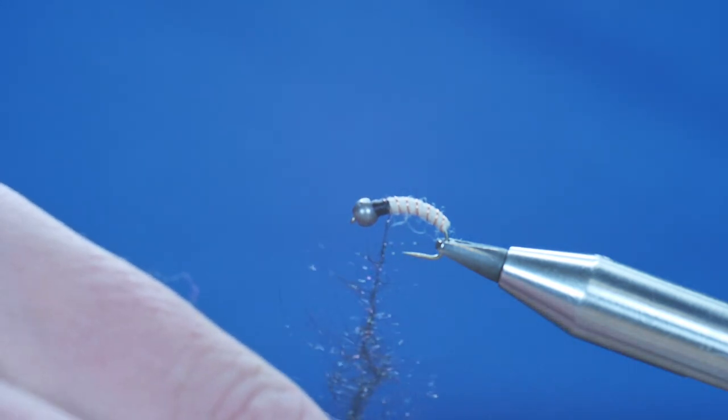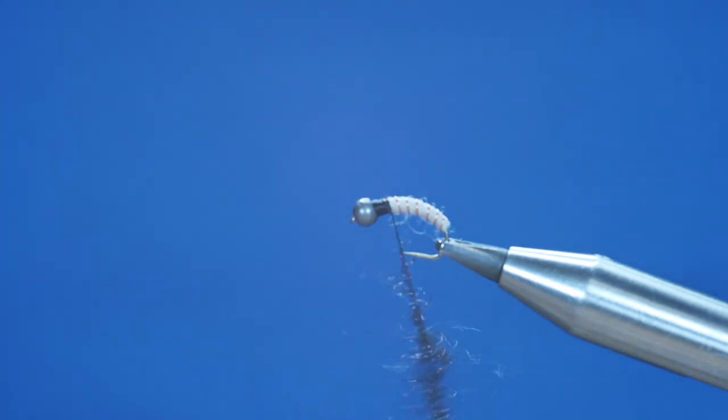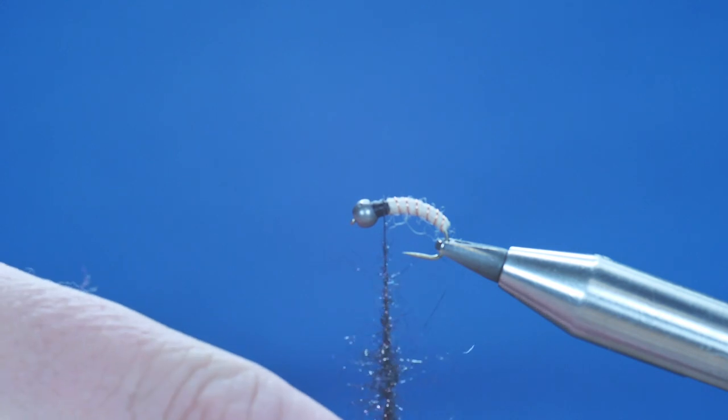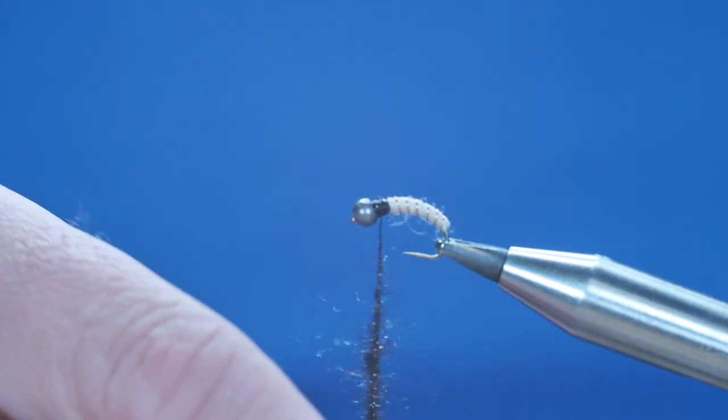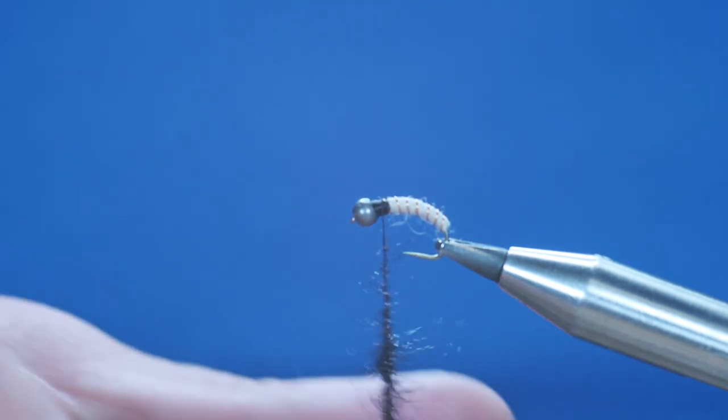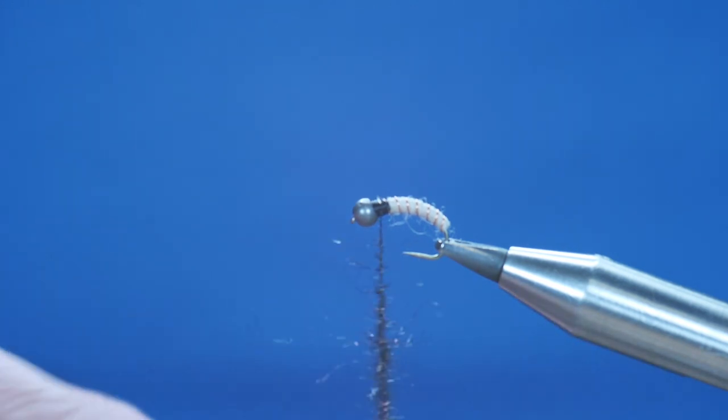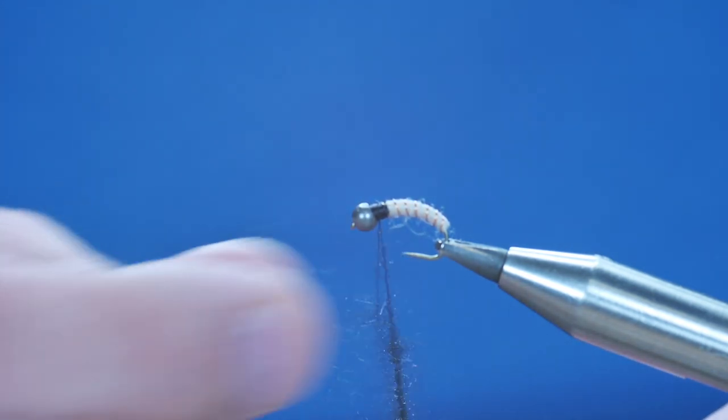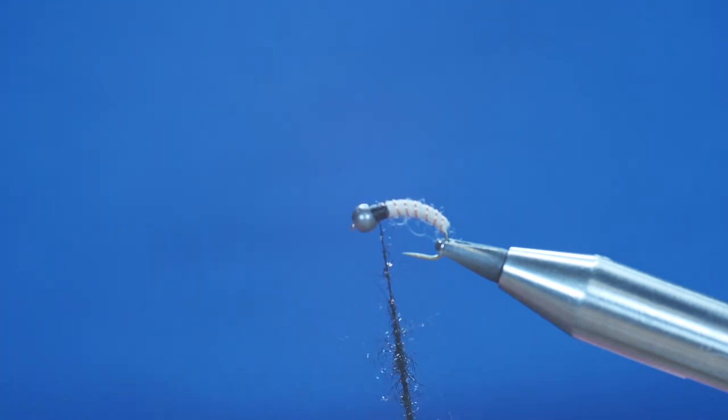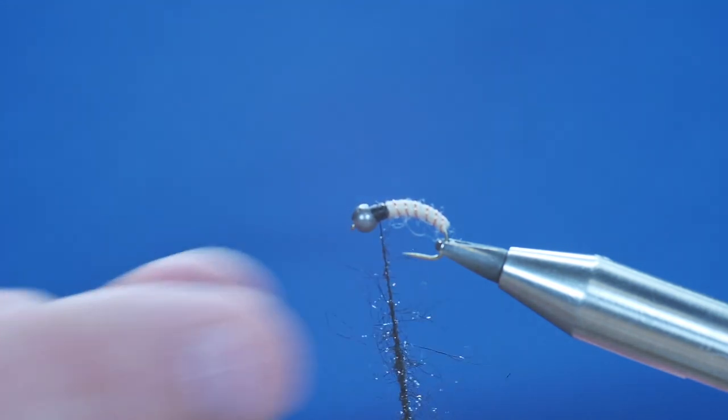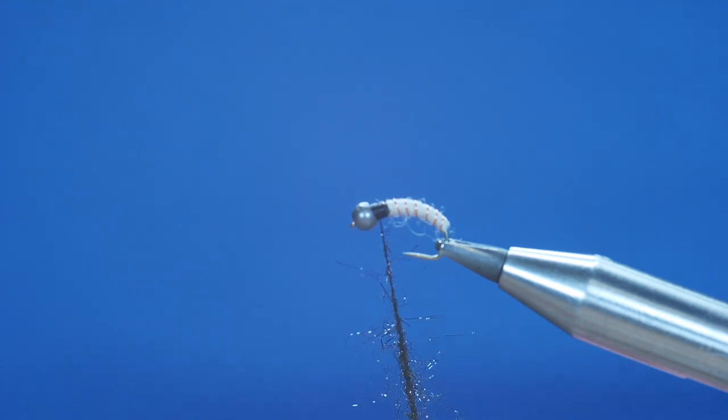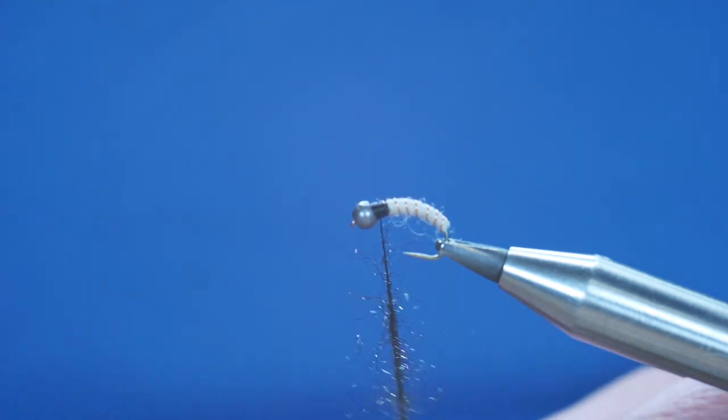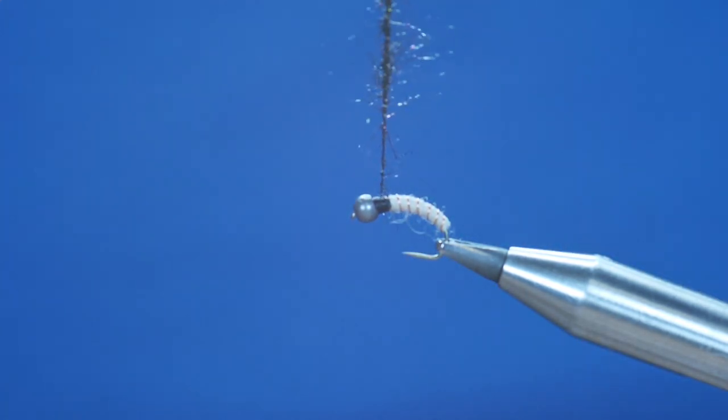I'm going to spin it up. Caddis pupa are quite an important part of a fish's diet, should I say. So this is a general purpose pattern that will serve you well. It works really well.